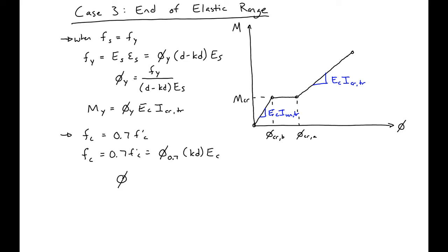We can solve for our curvature as 0.7f'c divided by kd times Ec. And then we can also solve for our moment, phi of 0.7 times Ec times our I cracked transformed.